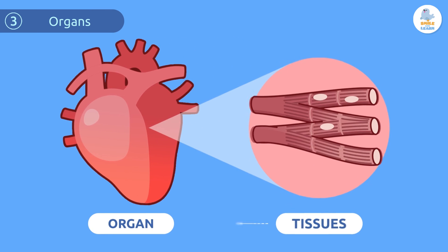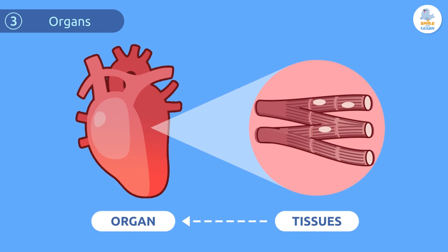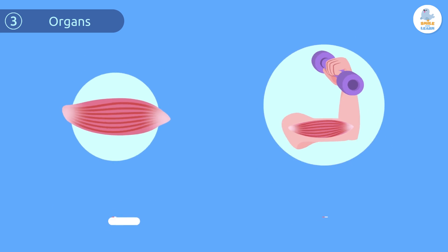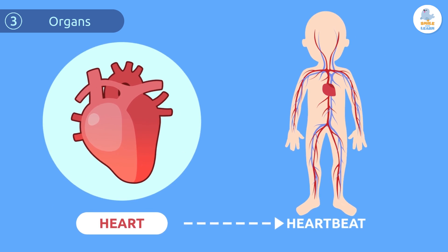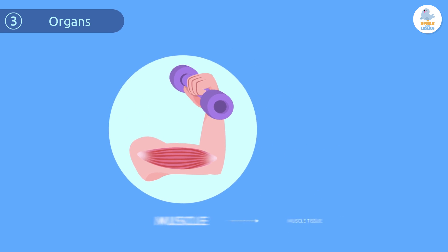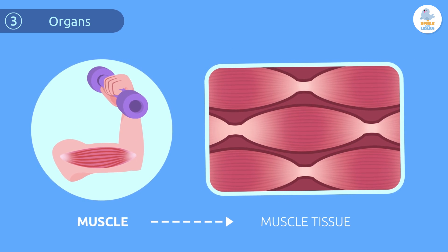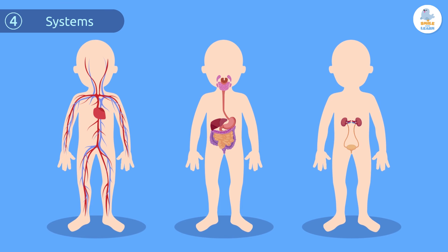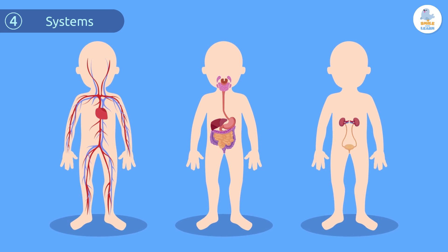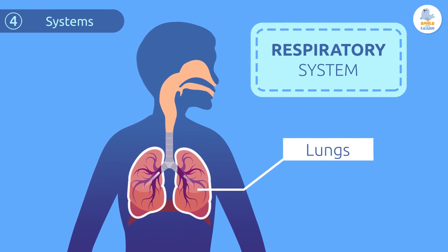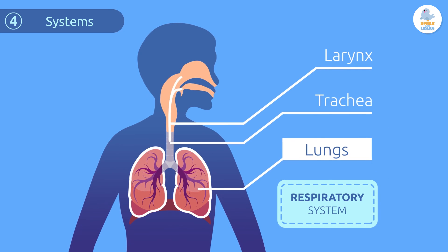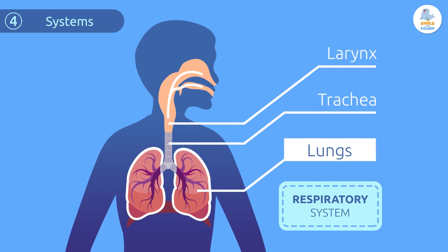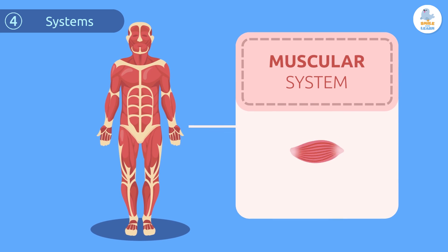Organs are made up of tissues that work together to carry out the same function. These functions can range from locomotion — which means movement — all the way up to a heartbeat. One example is a muscle, which is made up of muscle tissue. Systems are made up of organs that work in a coordinated manner to perform a function. For example, the muscular system is made up of muscles.